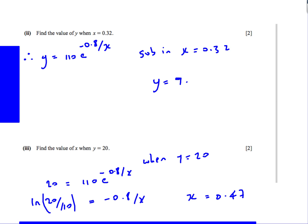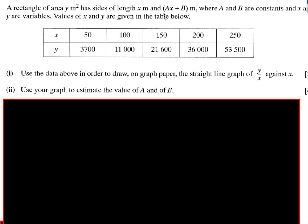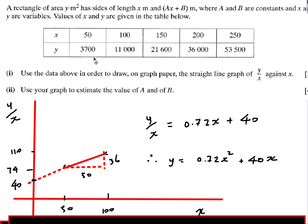For the last question, we're told to plot y/x against x, so y/x goes on the y-axis and x on the x-axis. At the moment we have x and y values, so we need to compute y/x. When x is 50, y/x equals 3700 divided by 50, which is 74. When x is 100, y/x equals 11000 divided by 100, which is 110. Plot those points, then extend the graph backwards to find the y-intercept, which is 40.